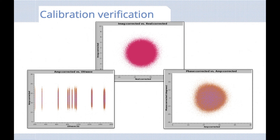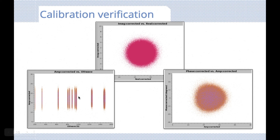When looking at corrected amplitude versus UV distance, note that only for point-like calibrators will this be a flat line. If there is structure in my source — both calibrator source and science source — this will not be a flat line, as structure will start to show up. So be careful to actually use a point source when applying this evaluation.